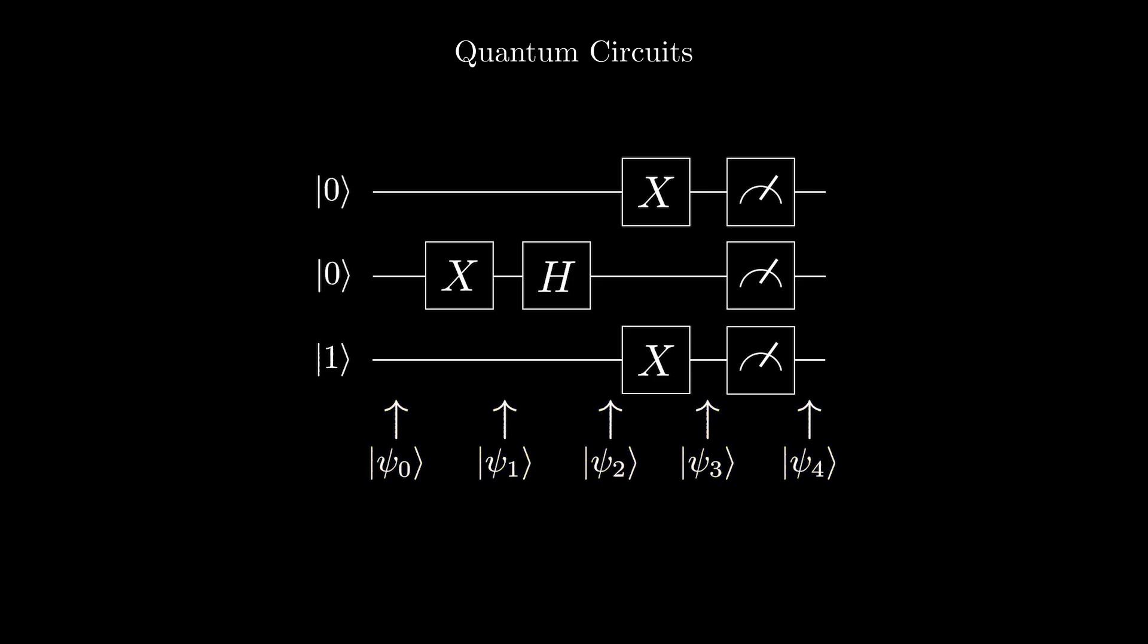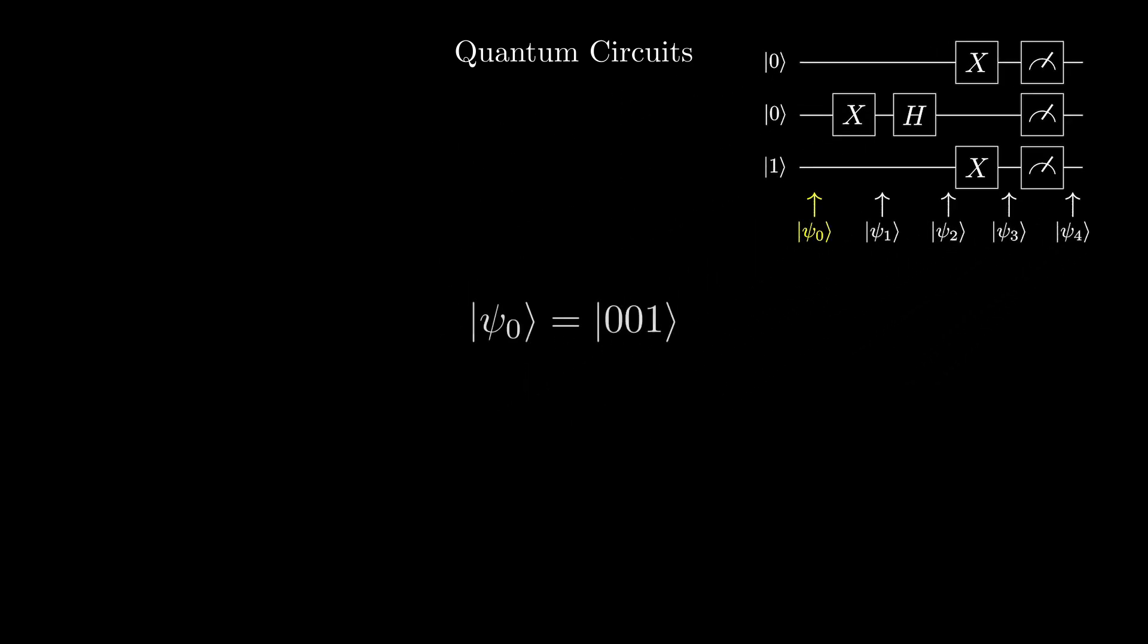Let's go through this circuit. At psi sub 0, we have the state 001. Then at psi sub 1, we apply an x-gate to the second qubit.